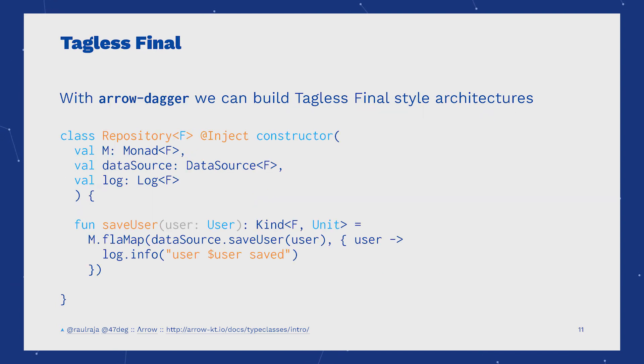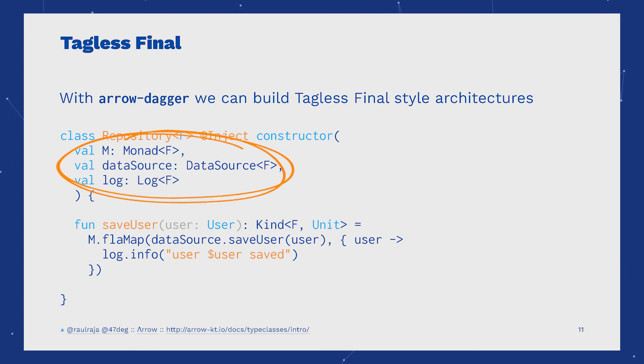With the Aero Dagger module, we can achieve tagless final style architectures where all of our constraints are injected in our services.